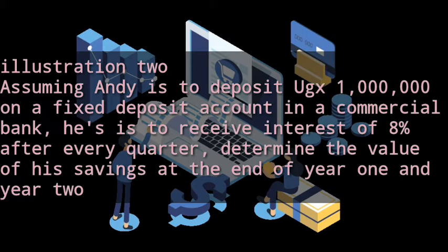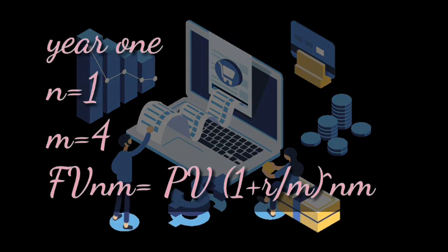The statement which says he is to receive interest of eight percent after every quarter indicates that there will be multi-compounding. That statement shows you there will be multi-compounding, so we shall use the formula of multi-compounding to determine the future value. From the question, he is to receive interest every quarter.